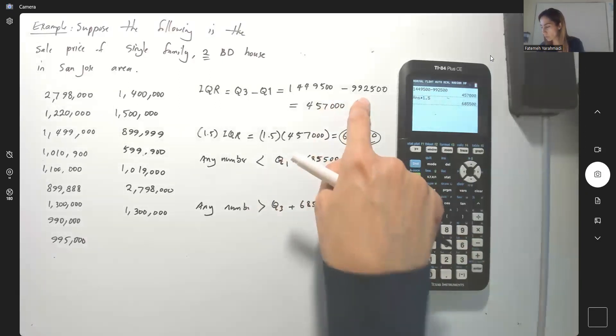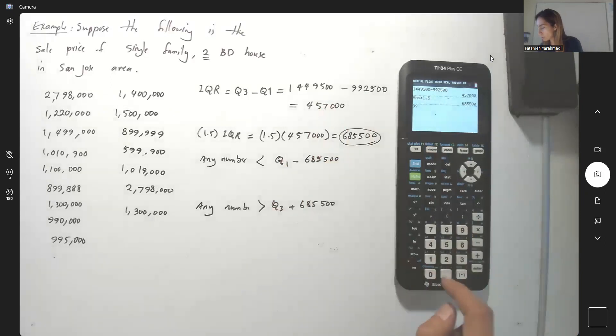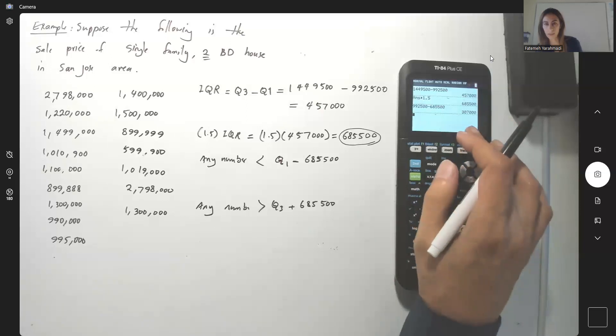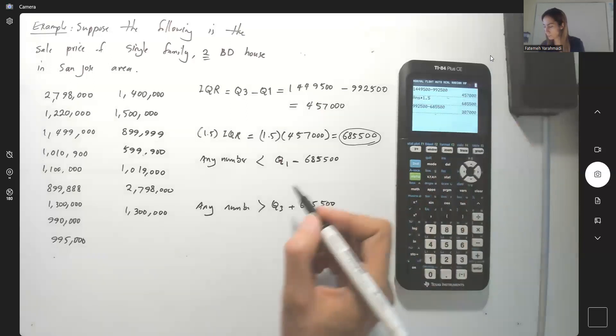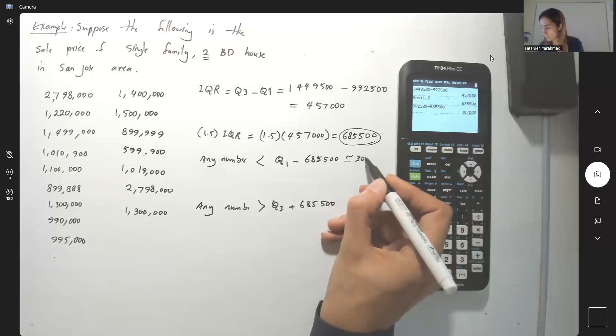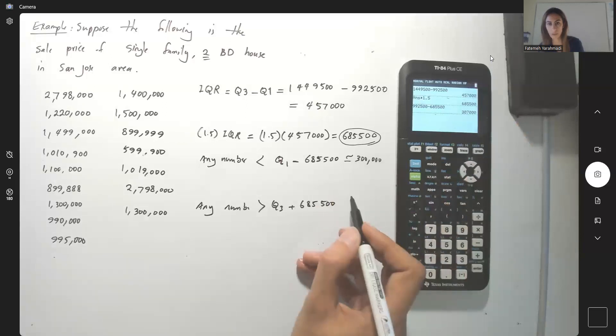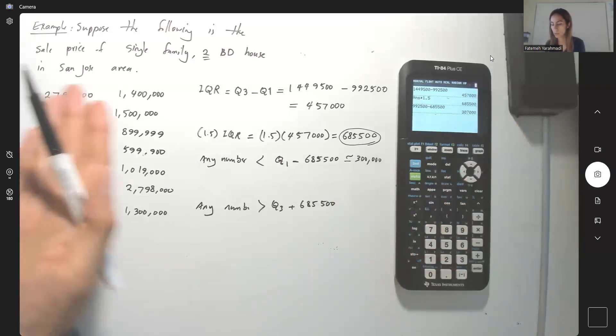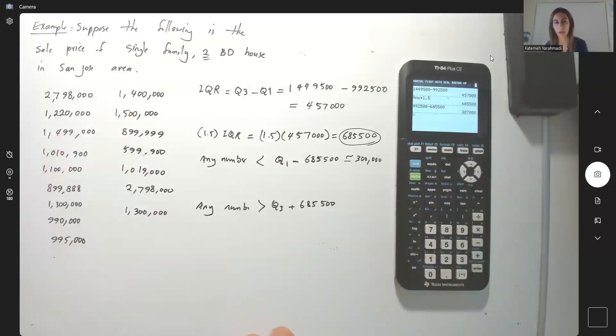So what is my Q1? My Q1 is 999,2500 minus 685,500. Any number less than about 300,000, which we don't have, is an outlier. There is no number less than $300,000.